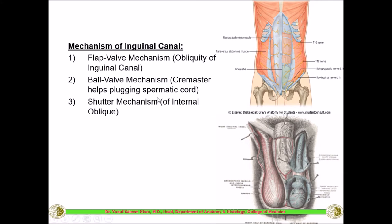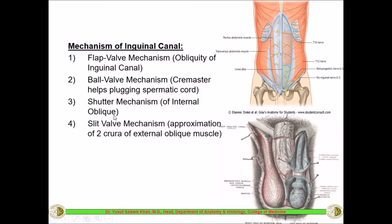The third mechanism is the shutter mechanism. The internal oblique and transverse abdominis form the anterior wall, roof, and posterior wall of the canal. Because the internal oblique forms so much of the canal, when it contracts it is pulled downwards just like a shutter, totally blocking the canal. This shutter mechanism prevents hernia formation.